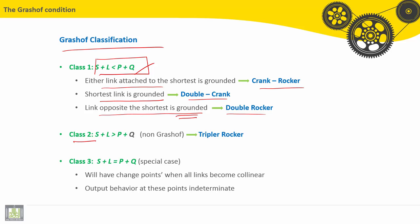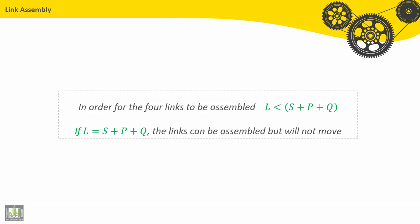Class 2: If S plus L is greater than P plus Q, this is a non-Grashof linkage. Class 3 is a special case which will have change points when all links become collinear, and output behavior at these points is indeterminate.